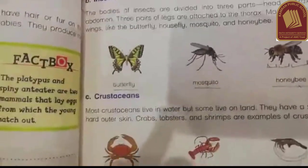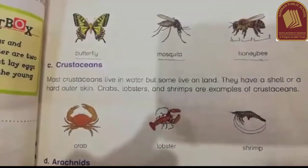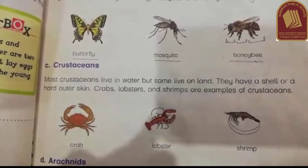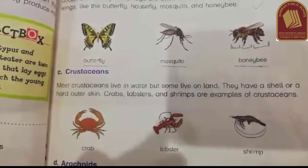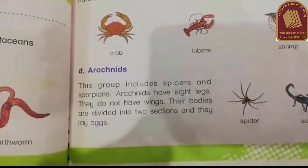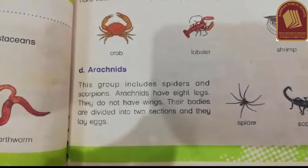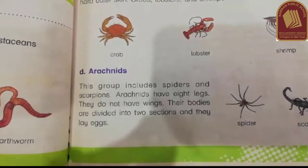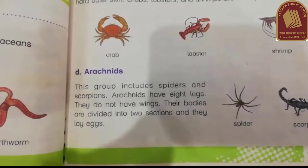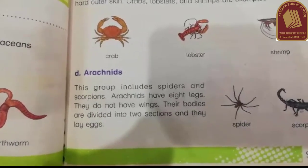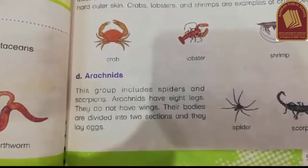The next subgroup is crustaceans. Crustaceans live in water and also on land. Their outer covering is made from a hard shell. The next subgroup is arachnids. Their body is divided into two parts and they do not have wings. They also lay eggs.